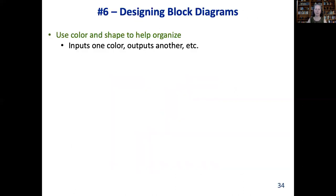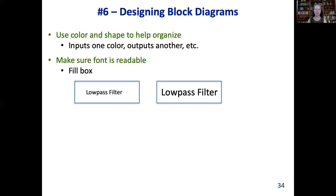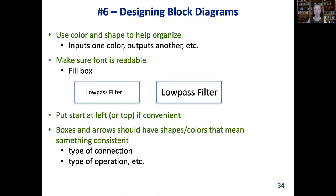Moving on to block diagrams. You should use color and shape to help you organize. For example, the inputs could all be one color, and the outputs could be another color. Make sure the fonts are large enough. You can generally make a font large enough to fill the whole box. You often see someone label a box like this when they should be doing this. Put the start at the left or the top if you possibly can. And it's important to make the shapes and colors of boxes and arrows mean something consistent, such as the type of connection, the type of data, or the type of operation.